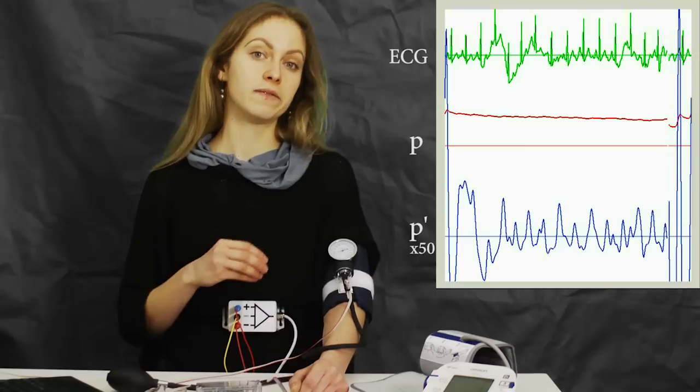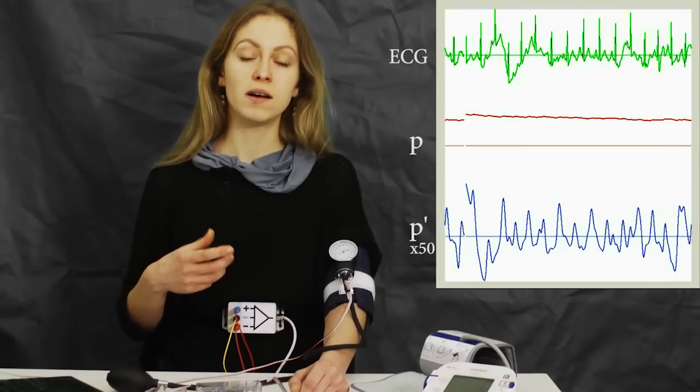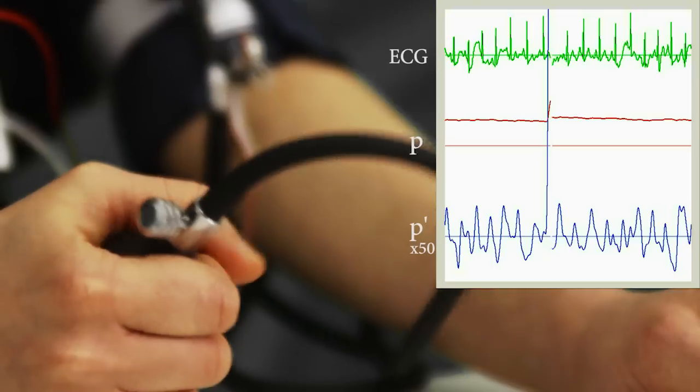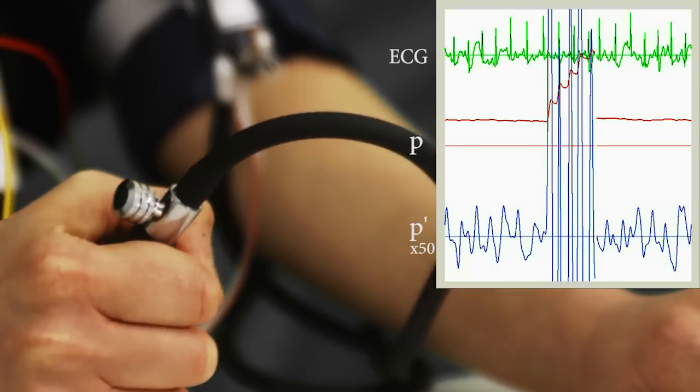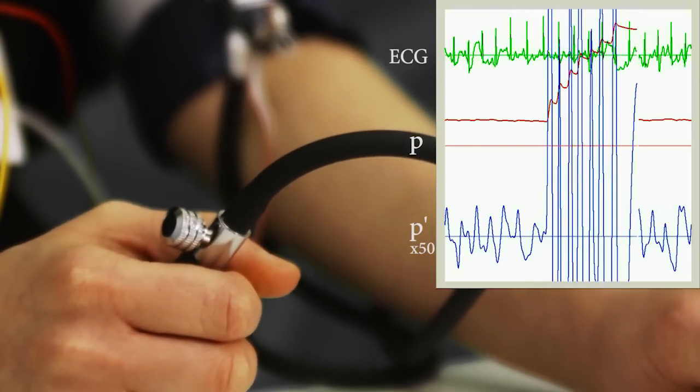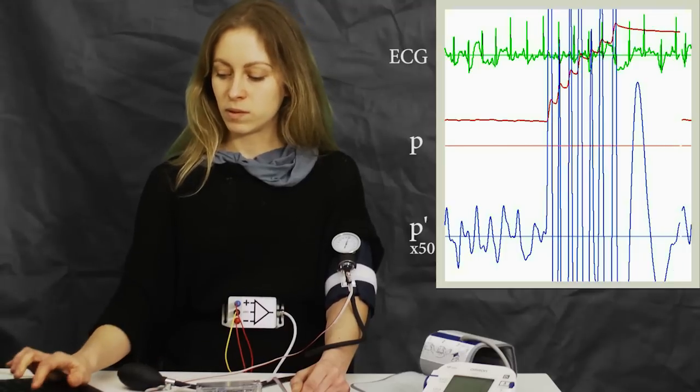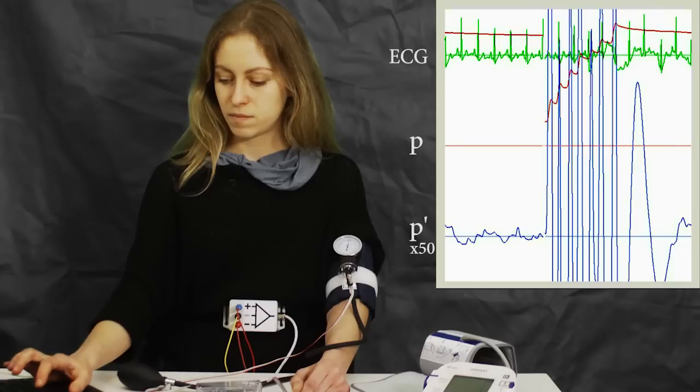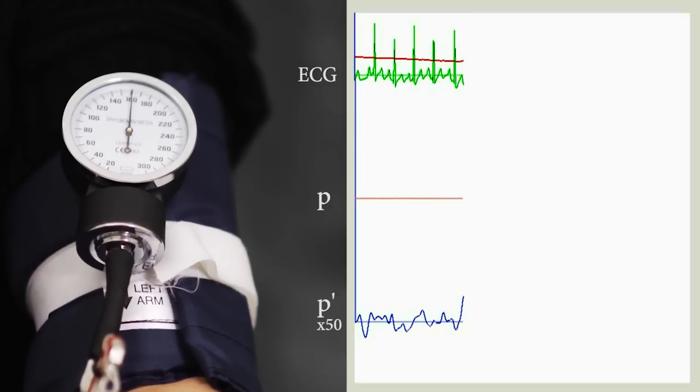Let me pump the cuff up to a point which is higher than what my systolic blood pressure would be. I'll clear our data from the screen and then I slowly reduce the pressure in the cuff.